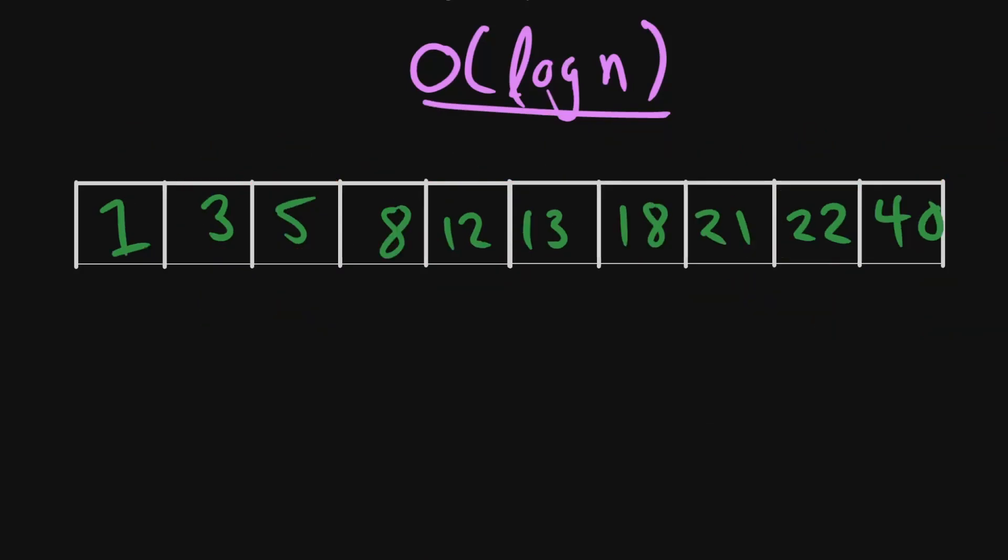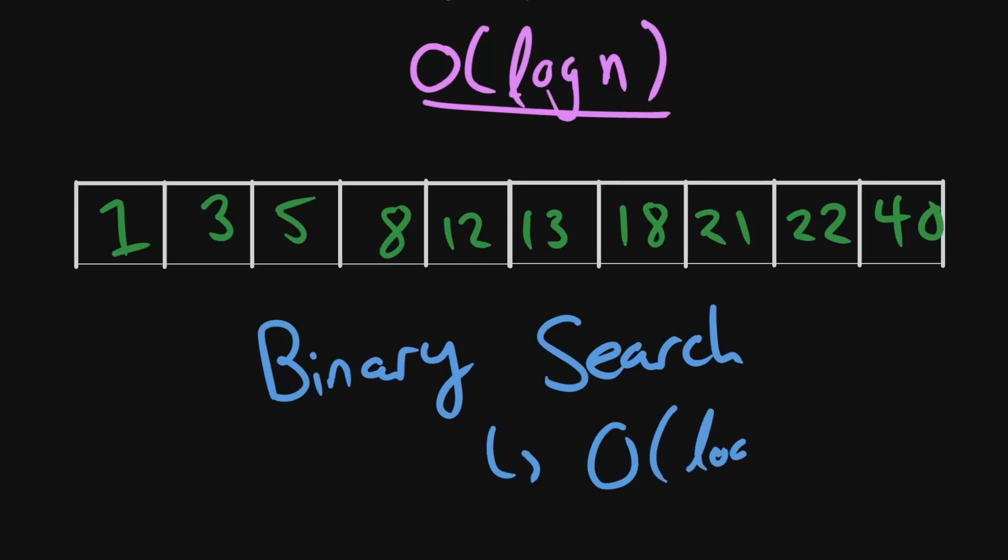You can see that an algorithm like this will run fairly quickly because we're not looping through every single individual component. We're skipping through. If you're ever wondering why something like this would be useful, where we don't look through everything and we just kind of divide the array by half, we're going to introduce something called a binary search.